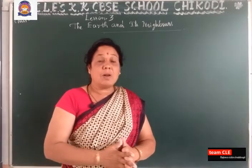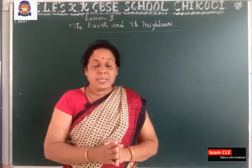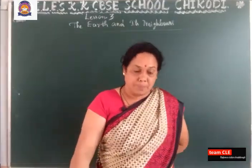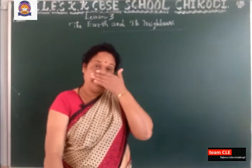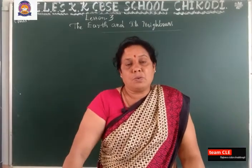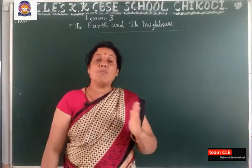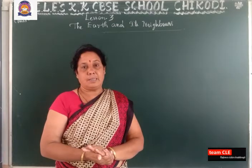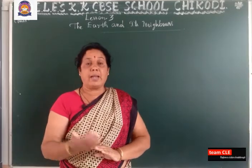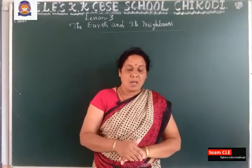The Earth belongs to the solar system. Besides the Earth, there are 7 other planets in the solar system, and all these planets are Earth's neighbors. Solar means 'of the sun' or 'from the sun.' Our solar system includes the sun and 8 planets, and with these, other small objects that all move around the sun.